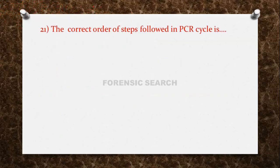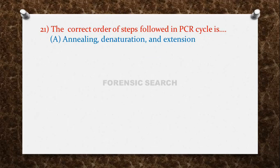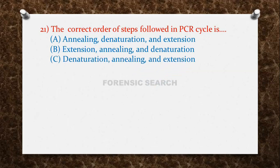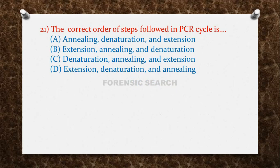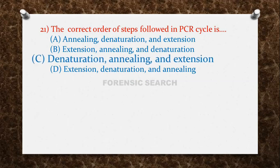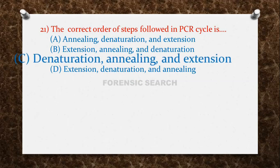The next question: the correct order of steps followed in a PCR cycle is — Option A: annealing, denaturation, and extension. Option B: extension, annealing, and denaturation. Option C: denaturation, annealing, and extension. Option D: extension, denaturation, and annealing. The correct answer is option C — denaturation, annealing, and extension.